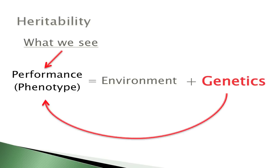The indicator or number we put toward that importance is heritability. We've got an animal's performance as a function of its genetics and environment. Genetics in most cases influences performance — most of what we're interested in for production is influenced by genetics. We want to know how much of what we see is influenced by genetics. That's what heritability is, and it plays a key role in calculating EPDs.